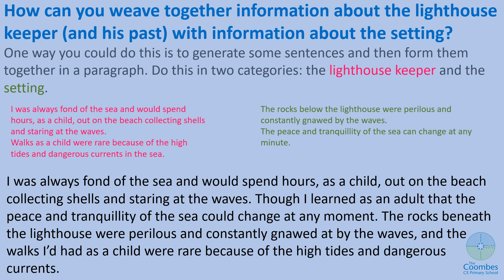Here are some additional idea examples. For the lighthouse keeper: 'I was always fond of the sea and would spend hours as a child on the beach collecting shells and staring at the waves'; and 'walks as a child were rare because of the high tides and dangerous currents.' For the setting: 'the rocks below the lighthouse were perilous and constantly gnawed by waves' — perilous meaning dangerous, gnawed being personification — and 'the peace and tranquility of the sea can change at any minute.' When combined, you might get: 'I was always fond of the sea and would spend hours as a child on the beach collecting shells and staring at the waves, though I learned as an adult that the peace and tranquility of the sea could change at any moment. The rocks beneath the lighthouse were perilous and constantly gnawed at by the waves, and the walks I'd had as a child were rare because of the high tides and dangerous currents.'